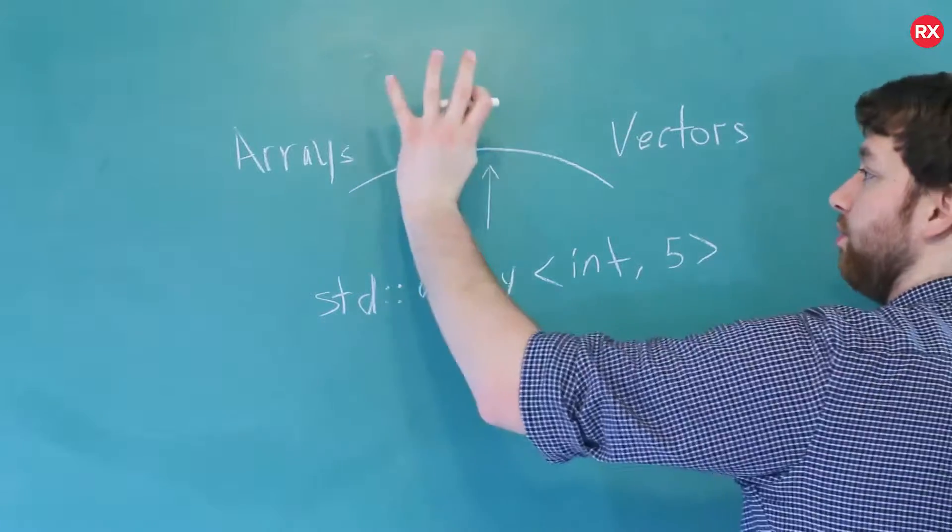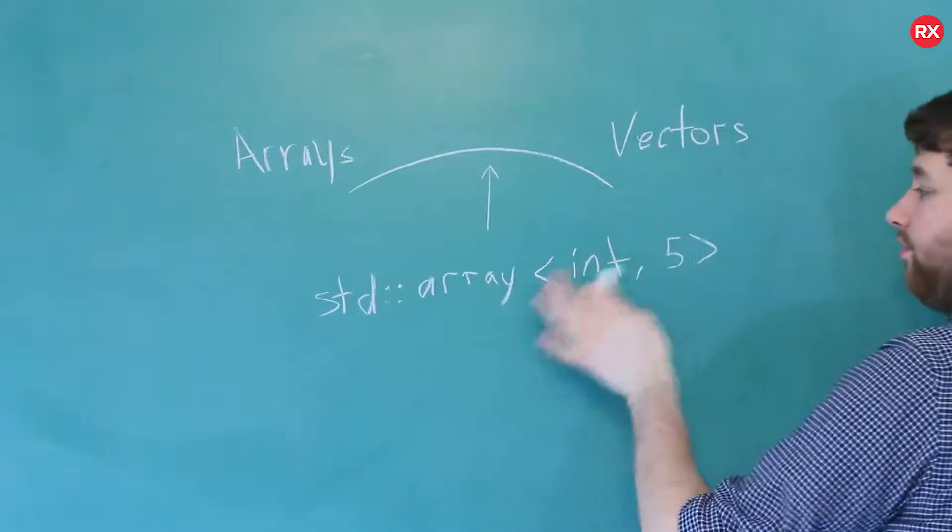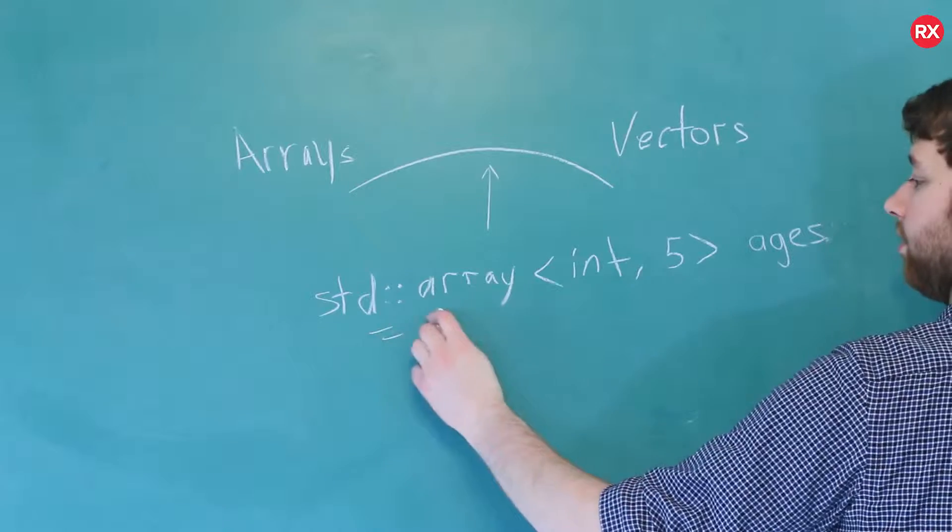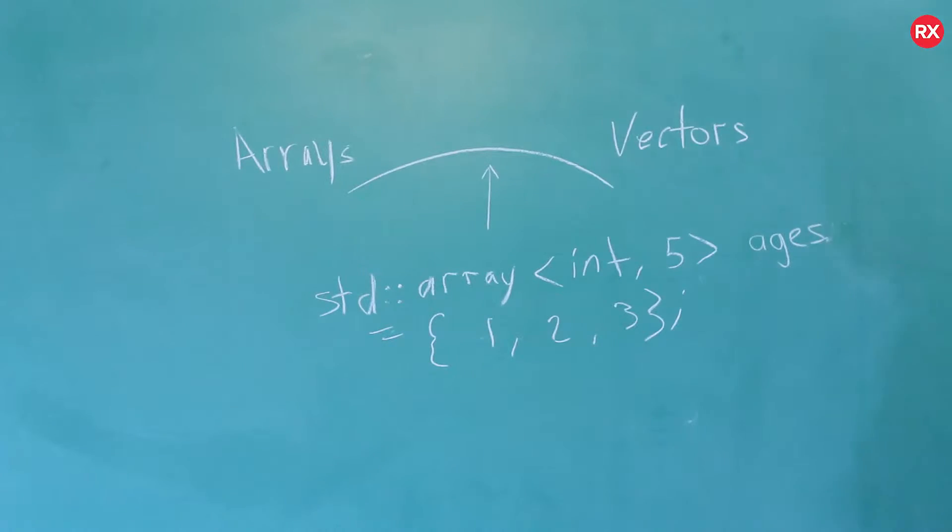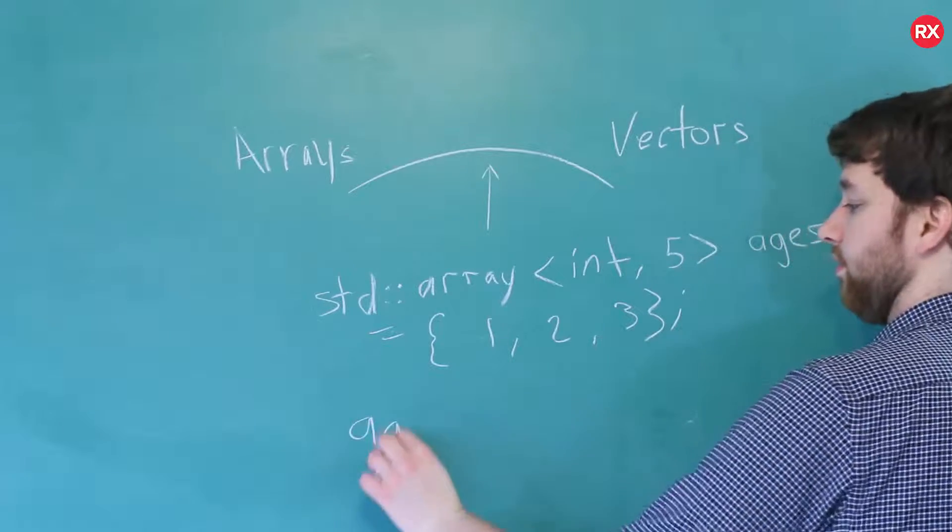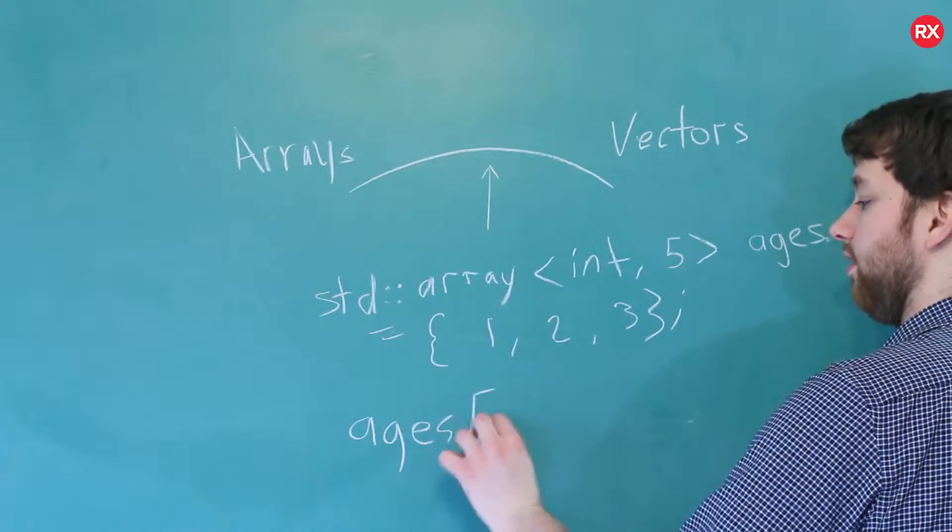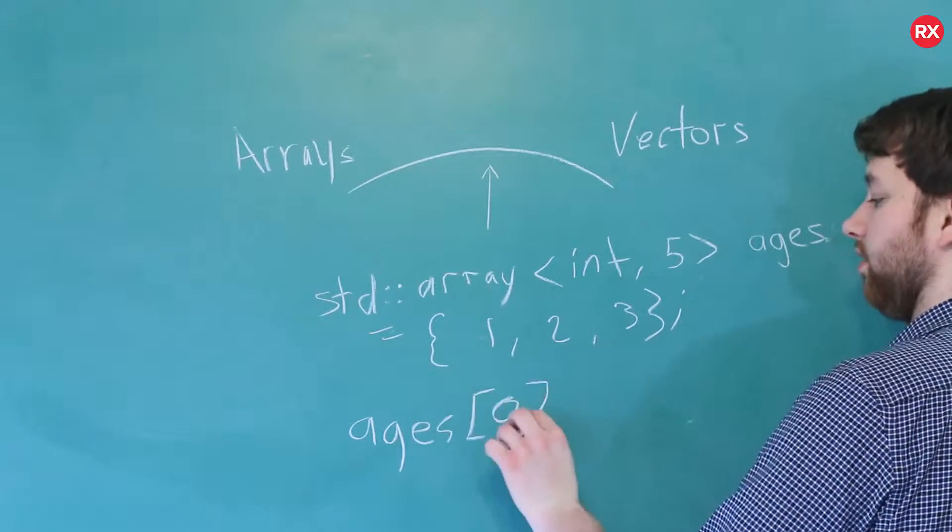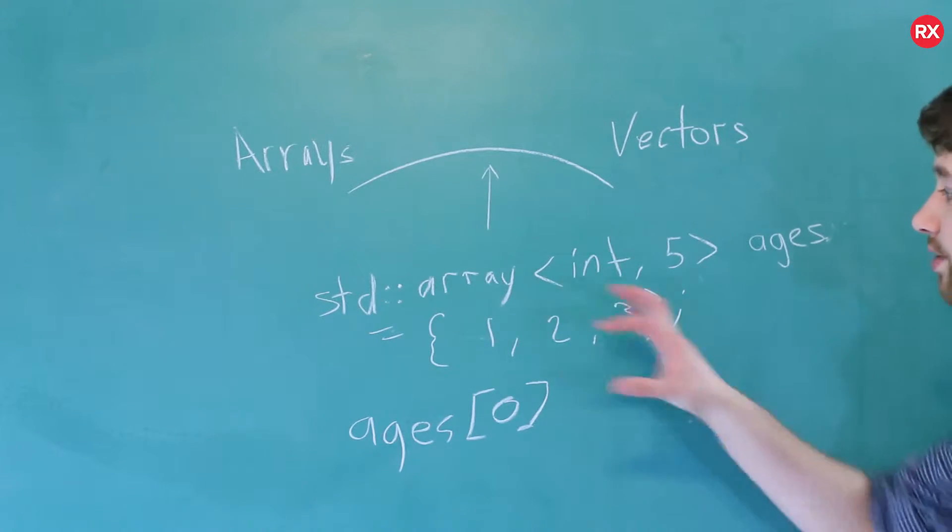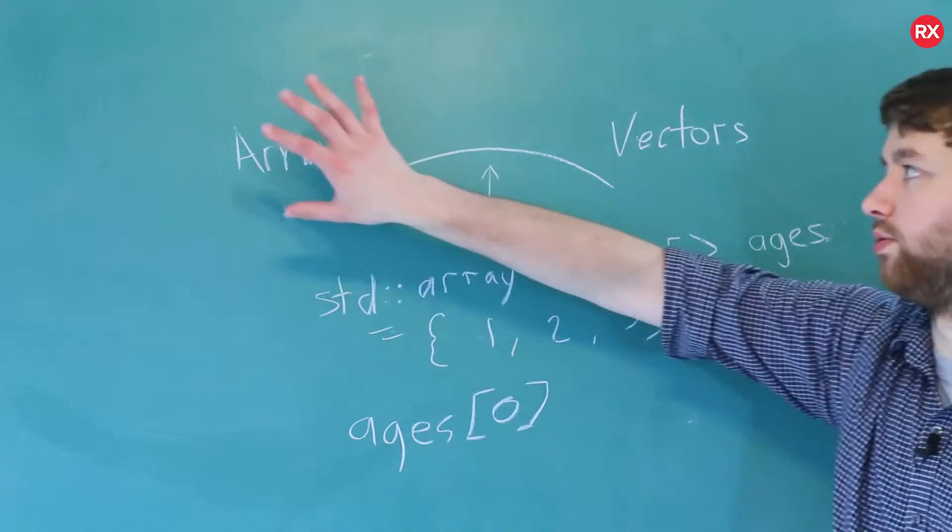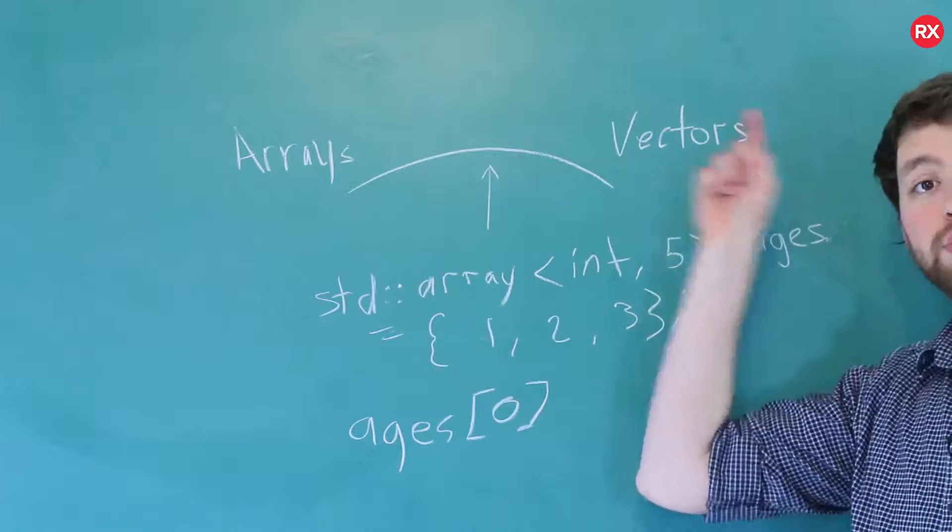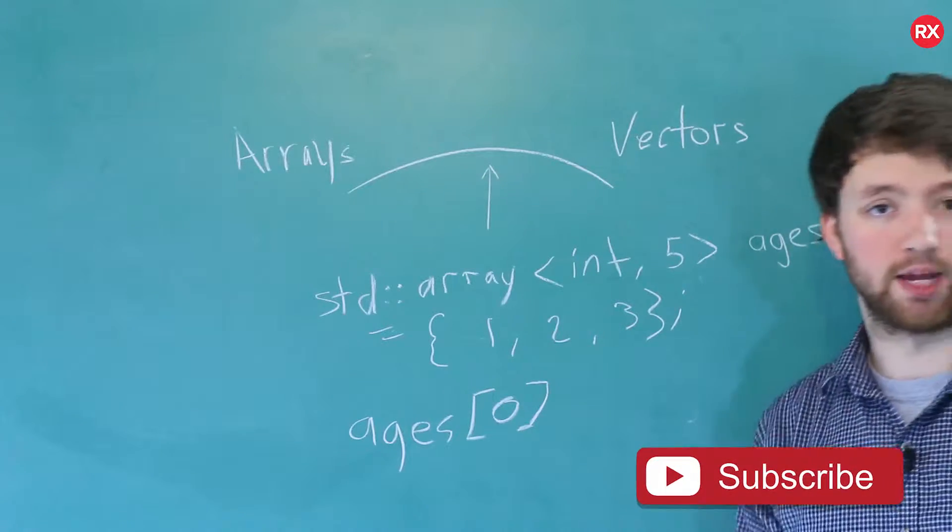Now we can use this array just like we would use a normal array or a vector. If for example this was called ages and we could assign it some values, we can access these values using array-like indexing. So we could say ages[0] to get that first element, [1] to get the second element, and [2] to get that third element. So actually using the array, it's almost identical to regular arrays or even vectors because you can do this with vectors too. But the primary difference is you get a little bit of extra capabilities.